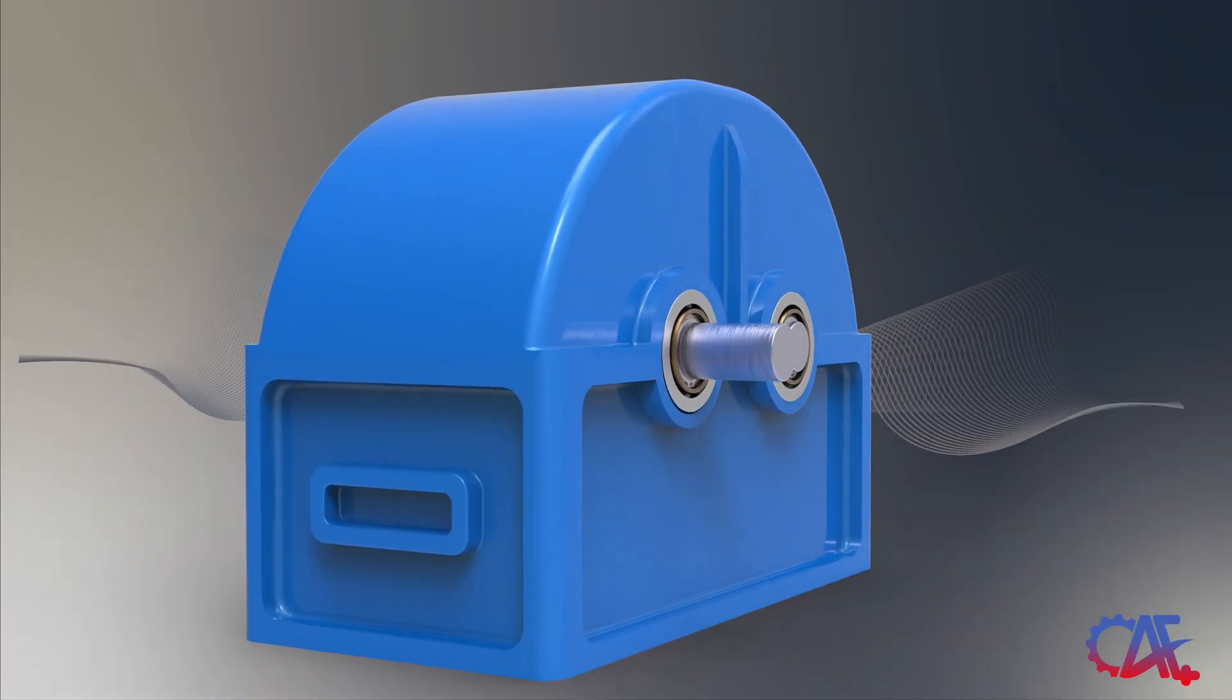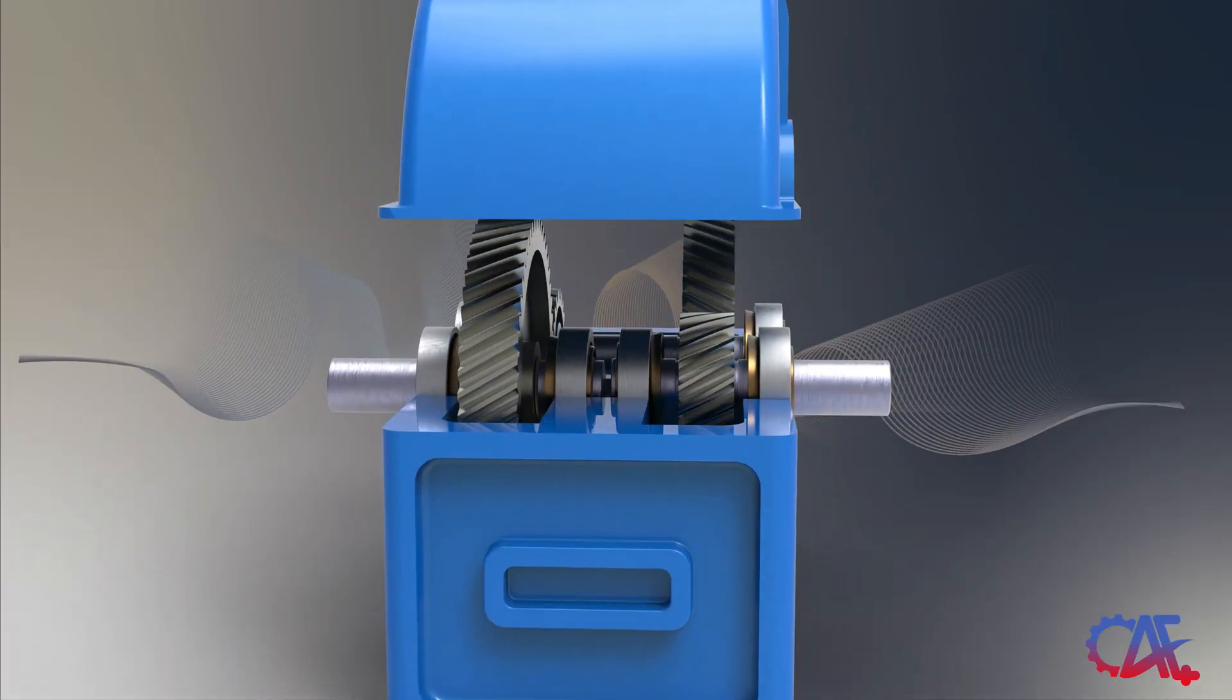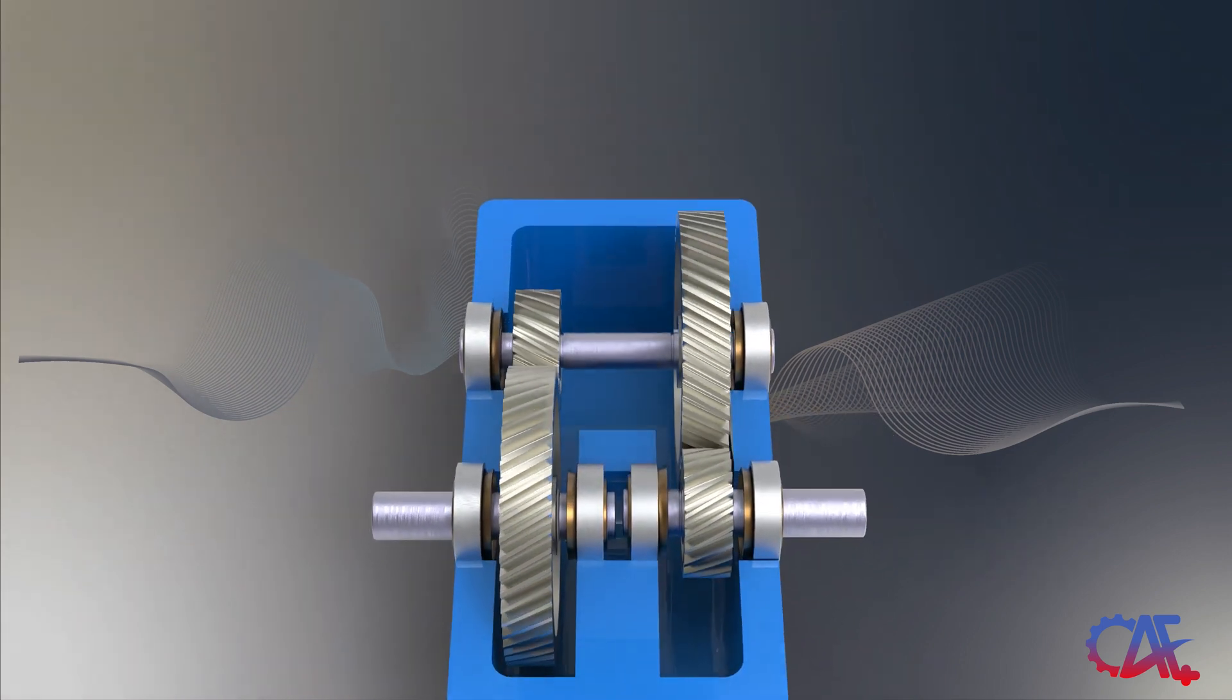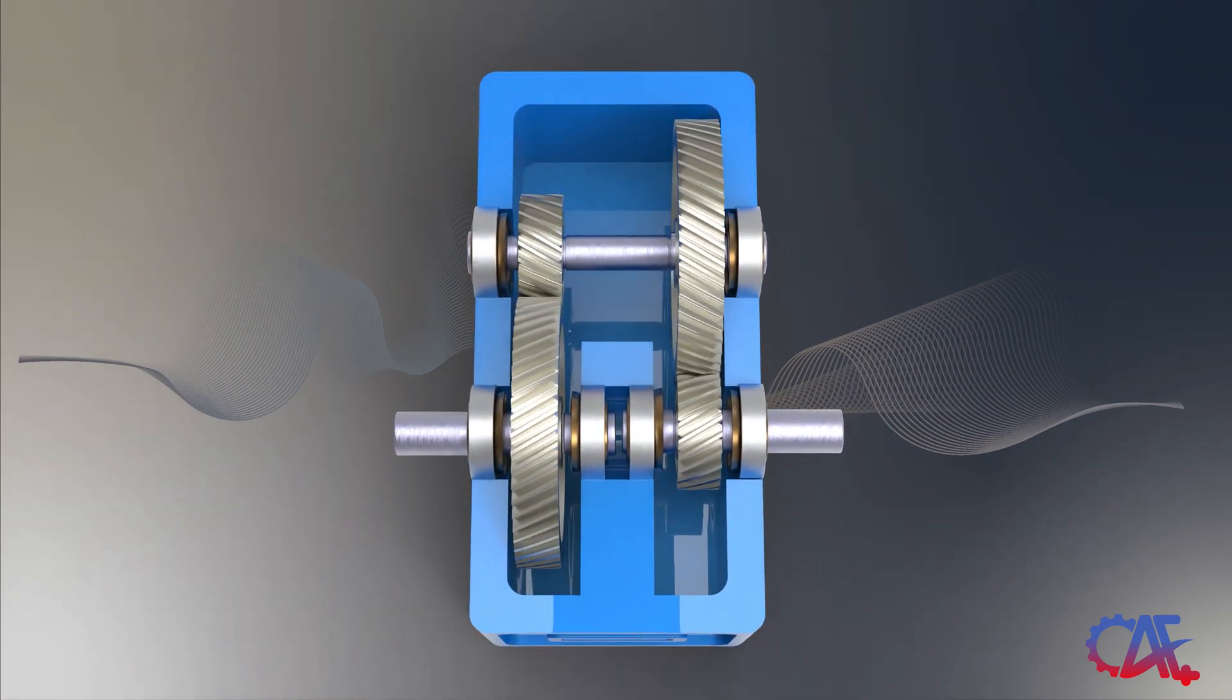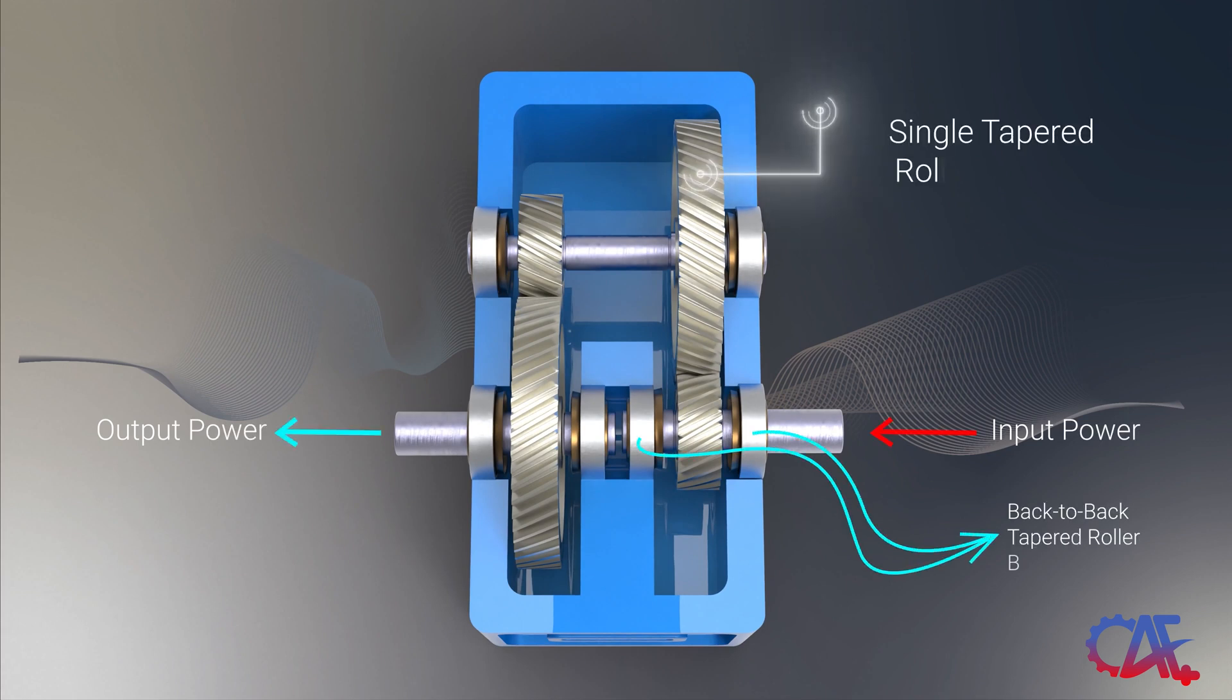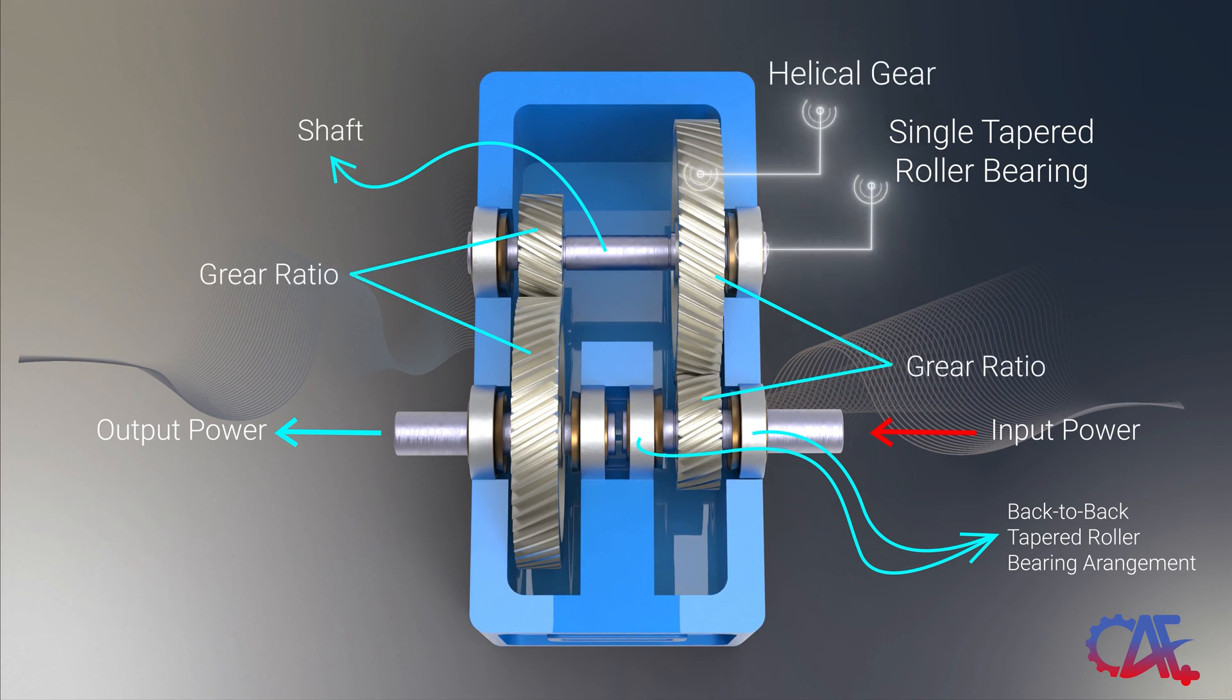For our second application example, we will explore the inner components of an industrial gear speed reducer and how tapered roller bearings are utilized in it. A gear speed reducer, primarily powered by an electric motor, uses the principle of gear ratios, determined by the relative number of teeth on the input and output gears, to modify shaft speed and torque. The output delivers decreased speed but amplified torque to connected devices.